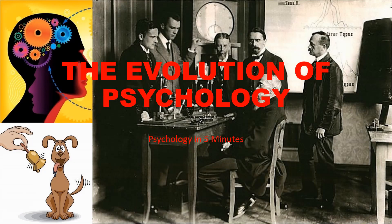Hello everyone, welcome back to Psychology in Five Minutes. This video will be all about the evolution of psychology — where it started in experimental psychology, then moving on to behaviorism in the early 20th century, and then from the 1950s onwards focusing on what is now known as cognitive psychology, which still dominates the field to this very day.